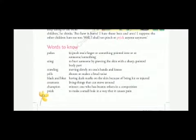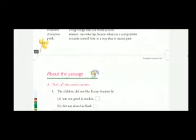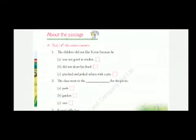Now let us read and understand the words highlighted while reading the story. Pokes: to push one's finger or something pointed into or at someone. Sting: to hurt someone by piercing the skin with a sharp pointed body part. Crawling: moving slowly on one's hands or knees. Yells: shouts or makes a loud noise. Black and blue: having dark marks on the skin because of being hit or injured. Creatures: living things that can move around. Champion: a winner, one who has beaten others in a competition. Prick: to make a small hole in a way that causes pain.